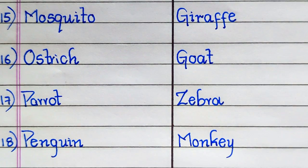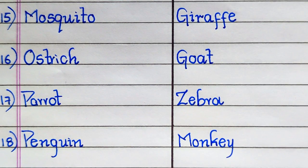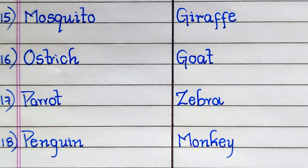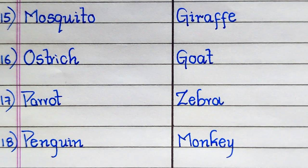The name of the 15th oviparous animal is Mosquito, 16th Ostrich, 17th Parrot, 18th Penguin. The name of the 15th viviparous animal is Giraffe, 16th Goat, 17th Zebra, 18th Monkey.